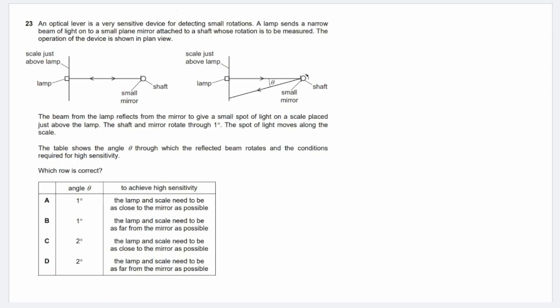Now in the question, the table shows the angle theta through which the reflected beam rotates and the conditions required for high sensitivity. Which row is correct? When we look at this question, most students will be very tempted to pick either A or B, because the question did mention that the shaft and mirror rotate through one degree. Therefore, the angle theta should be one degree. But in reality, the angle theta here is actually twice the angle of rotation, which is going to be 2 degrees instead.